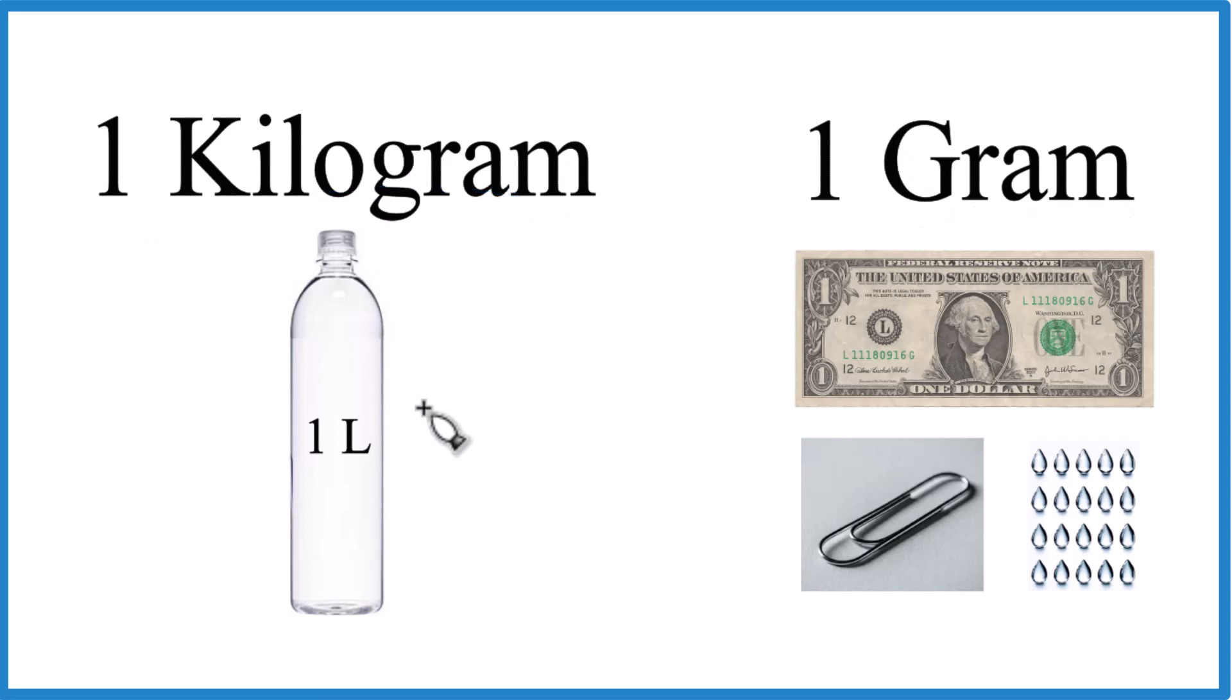But to start off, one kilogram has the mass of a one-liter bottle of water. That would weigh one kilogram. Grams are much smaller. A U.S. dollar bill weighs one gram, or a standard paperclip, or 20 drops of water.